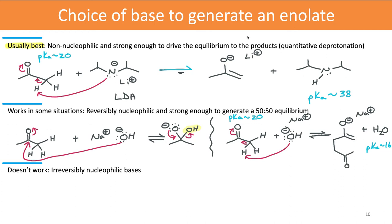So as soon as that enolate is formed, we can have a reaction with an electrophilic source right on the molecule itself. Or maybe there's a pretty reactive electrophile in solution ready to react irreversibly so that this equilibrium is pushed over to the right-hand side. A reversibly nucleophilic base that's strong enough to generate something close to a 50-50 equilibrium can work in some situations.